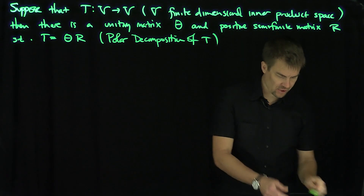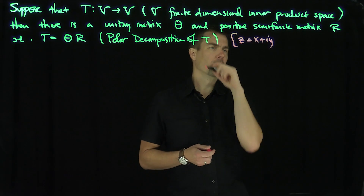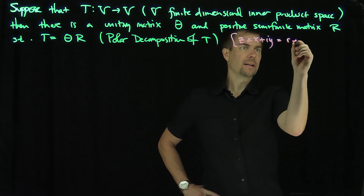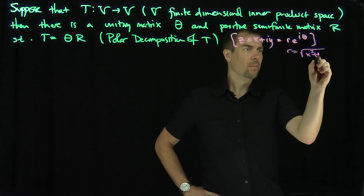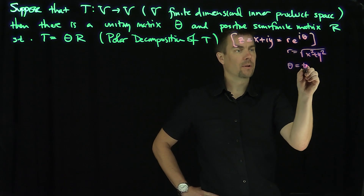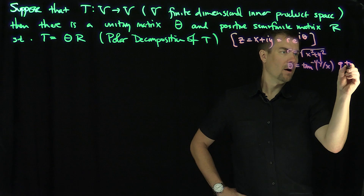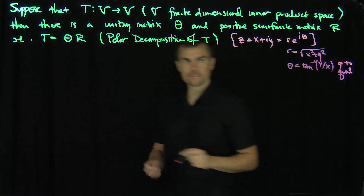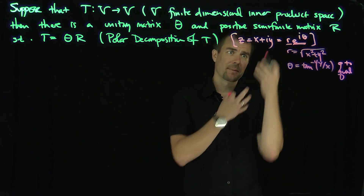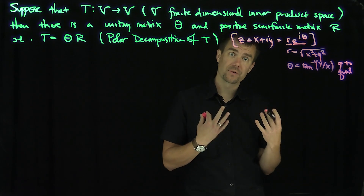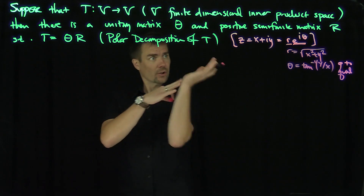This should remind you of the polar decomposition of a complex number. We have a complex number Z, which is X plus iY, and it can always be written as R·e^(iθ) by Euler's formula, where R is the square root of X² + Y², and θ is the inverse tangent of Y over X, up to the correct quadrant. So e^(iθ) is the unitary factor and R is the positive semi-definite factor, where R ≥ 0, equal to zero if and only if Z = 0, and θ is the rotational element of Z.